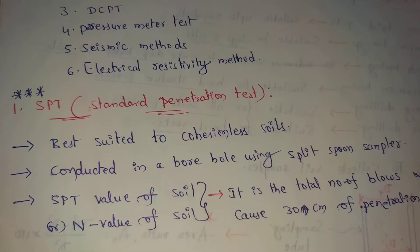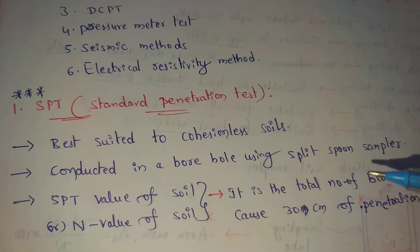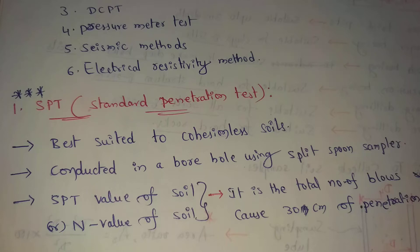Cohesionless soils include sand and gravel. The SPT test is conducted in a borehole using split spoon samplers.